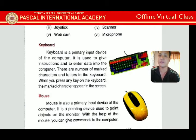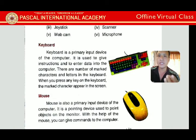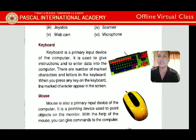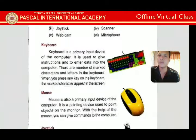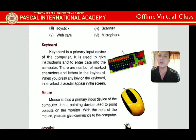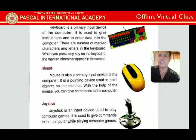In the keyboard, there are alphabets, numbers, 12 function keys, arrow keys, special characters, and a number pad — around 106 keys in a standard keyboard. When you press any key, the character appears immediately on the monitor. So the keyboard is a primary input device.